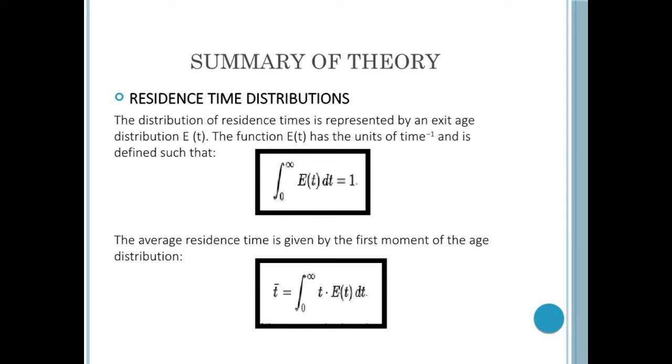Last but not least is the residence time distribution. The distribution of residence time is represented by an exit age distribution denoted by E as a function of t. The function E as a function of t has units of per time and is defined such that the integration of 0 to infinity, E as a function of t dt equivalent to 1. On the other hand, the average residence time is given by the first moment of the age distribution. T denoted as T bar equals to the integration of 0 to infinity, t E as a function of t dt.